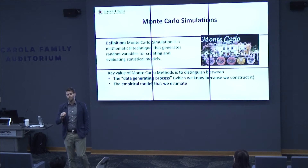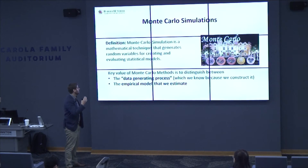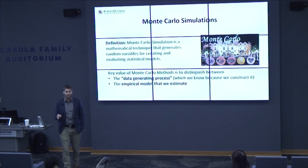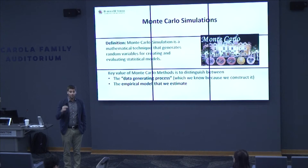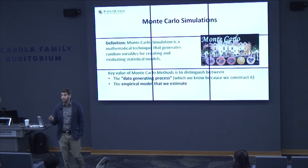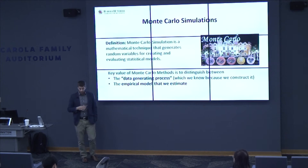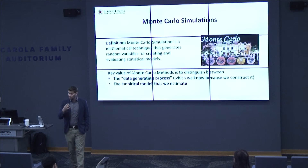A Monte Carlo is basically a simulation — a mathematical technique that generates random variables for creating and evaluating statistical models. The key value is that you create the data yourself. You create the X variables, the Y variables, how they're all related to each other — so you know the truth. You know exactly how they're all connected. But then you can create deviations from the truth and estimate models where you've created certain problems, like selection bias in various ways. You can see when the selection bias is going to be bad and when it's going to be good. We're going to go through all the bad hombres with Monte Carlo methods to see when the bad hombre is going to hurt us.